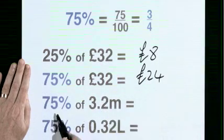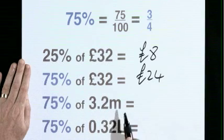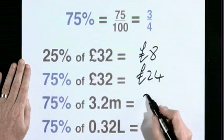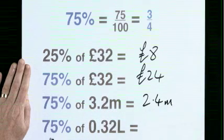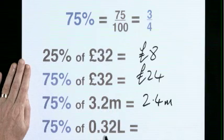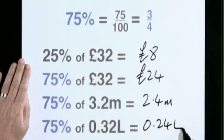75% of 3.2 metres is 2.4 metres. 75% of 0.32 litres is 0.24 litres.